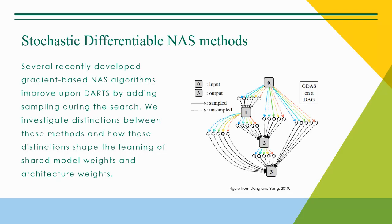Stochastic Differentiable NAS methods use the continuous relaxation scheme popularized by DARTs, but use the architecture weights to actually sample an operation on each edge for each training batch. We ask how and why different sampling methods give rise to different outcomes for our search.